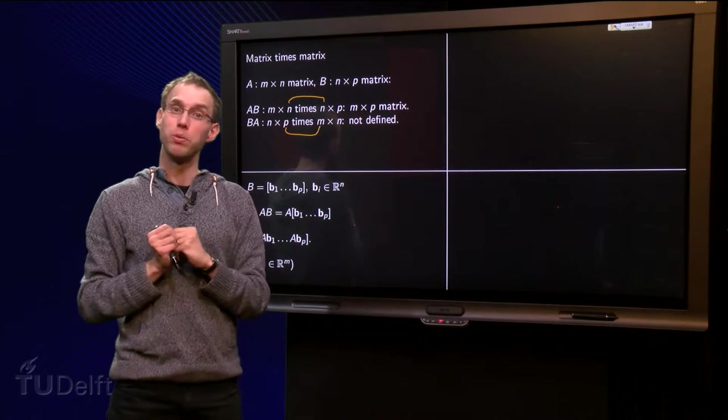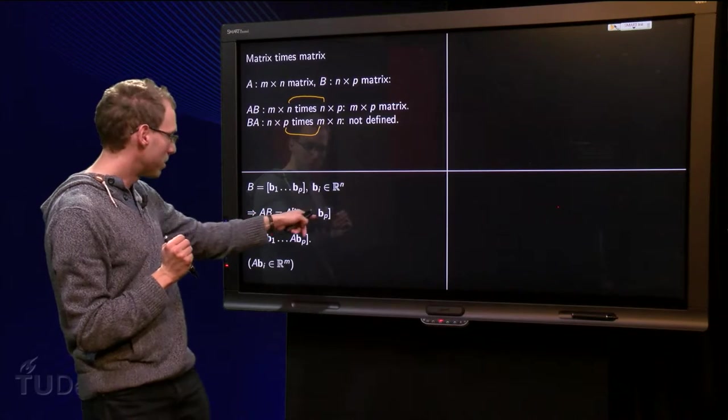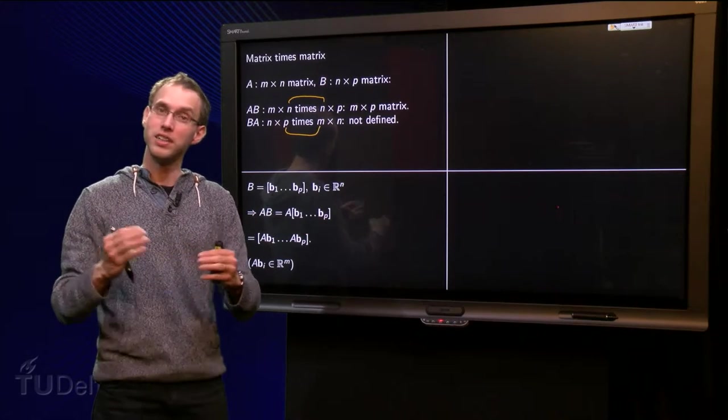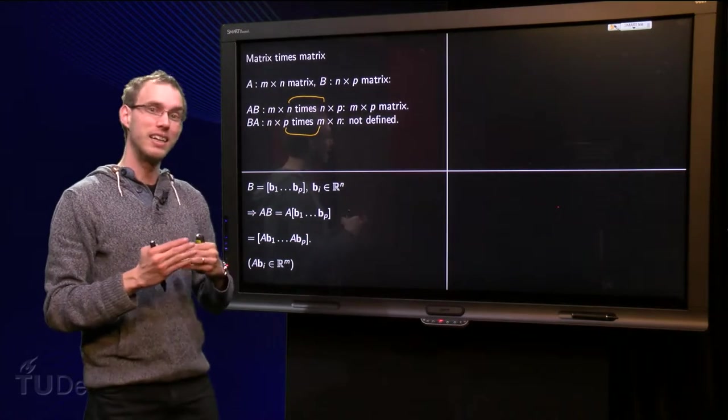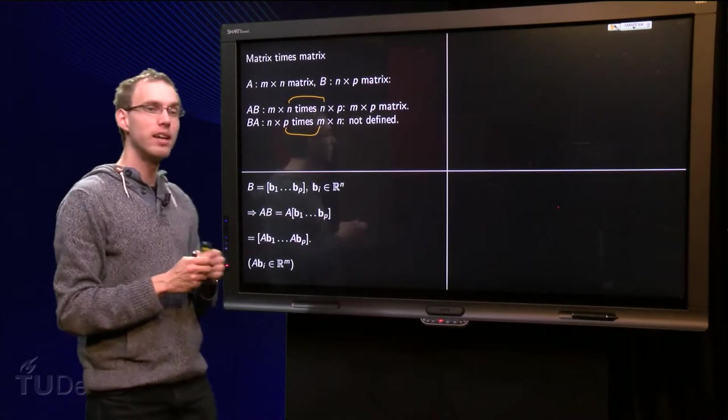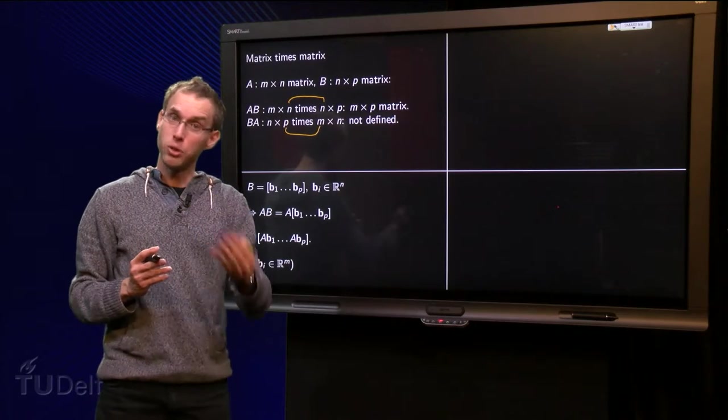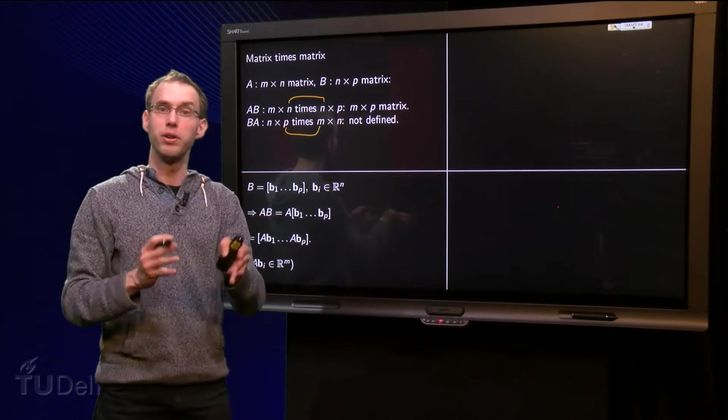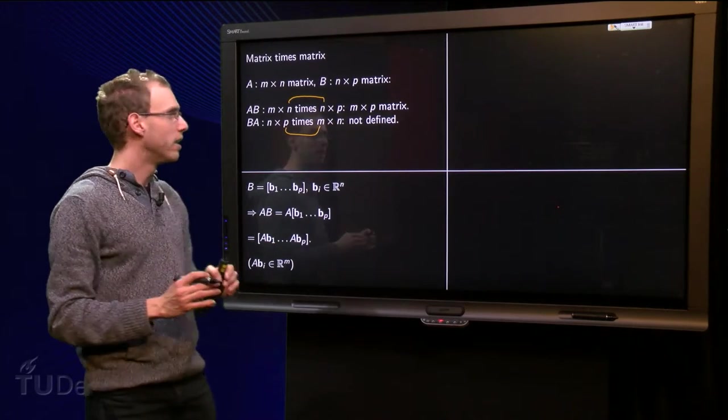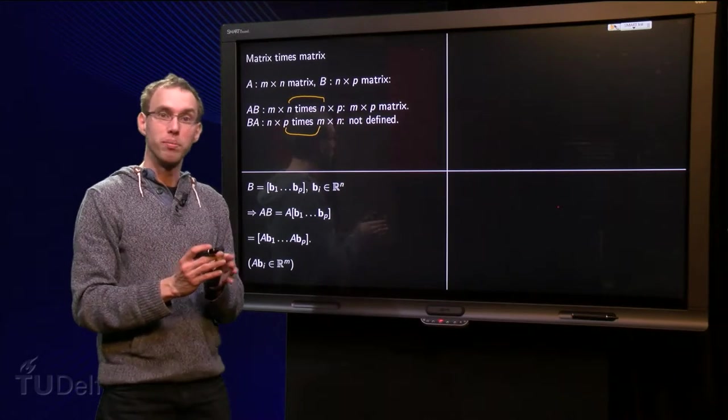How do we compute A times B? Well, A times B equals A times matrix B written in terms of its columns. And then the definition is that you just take the matrix A in. So A times B is a new matrix with its columns AB1 up to ABP. That means that the width of the matrix becomes P.